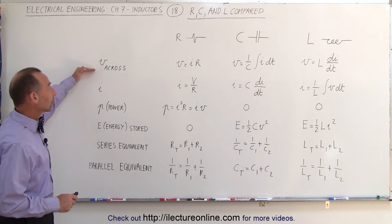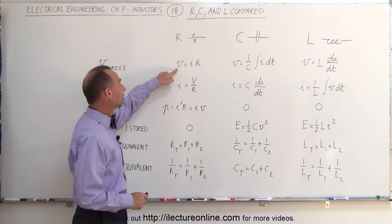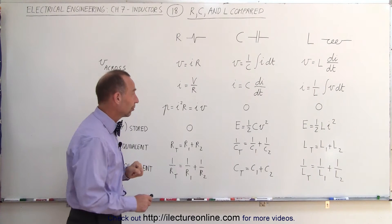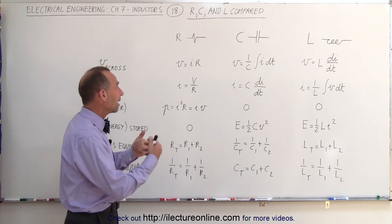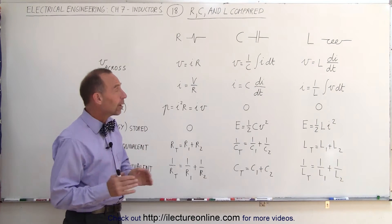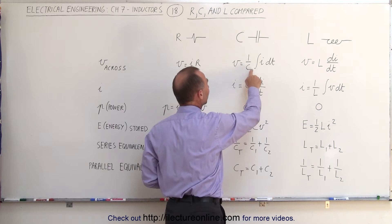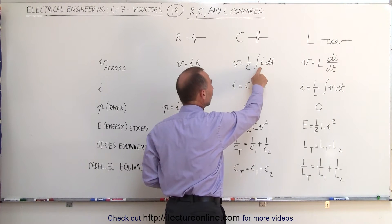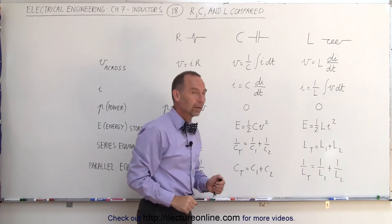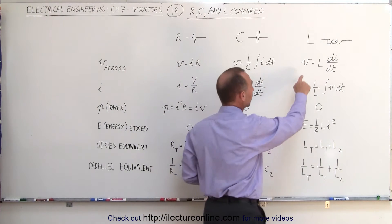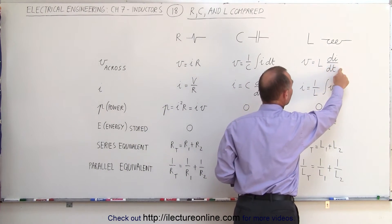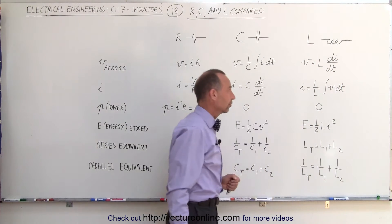As far as the voltage across, for a resistor, it's simply the product of the current times the resistance. So V across the resistor is IR. But V across the capacitor is equal to 1 over the capacitance times the integral of the current times dt. However, the voltage across an inductor is simply the inductance times the time derivative of the current through the inductance.